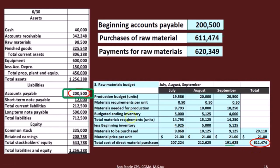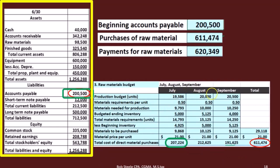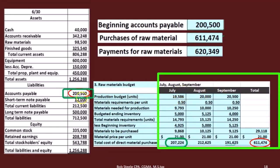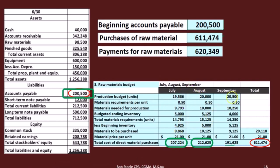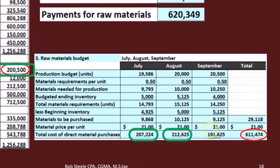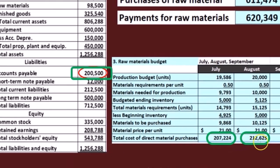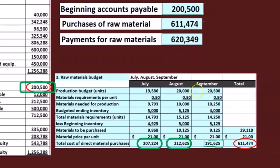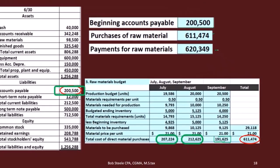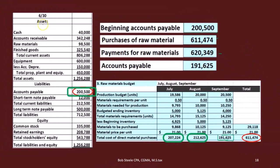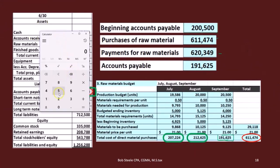We also need to account for payments for raw materials. The assumption is we pay the month following. We paid $200,000 for July's purchases in August, $207,000 for August's purchases in September, and $212,000 for September's prior-month purchases — totaling payments of $620,349. So taking $200,500 plus $611,474 minus $620,349, we end up with an ending accounts payable balance of $191,625.